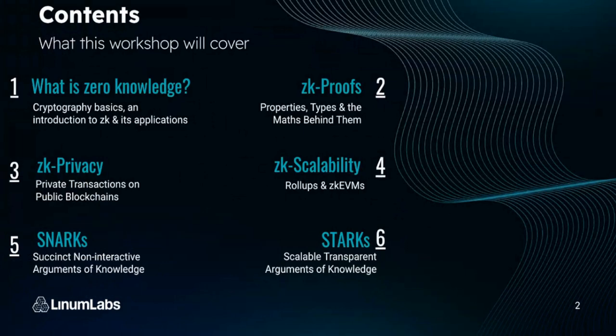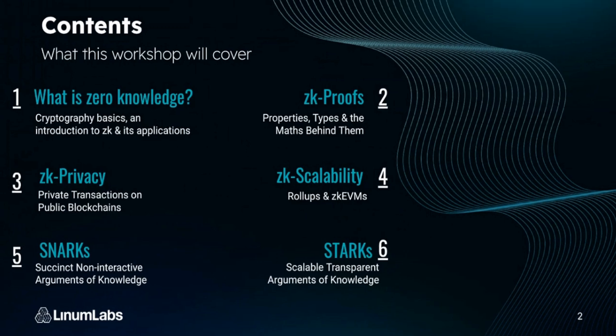What we'll be covering today is cryptography basics and an introduction to zero knowledge and its applications. Then we'll look at zero knowledge proofs, their properties, the types of zero knowledge proofs and the math behind them. We'll look at privacy and how to get private transactions on public blockchains, zero knowledge scalability through rollups and ZK-EVMs, ZK-SNARKs — the succinct non-interactive argument of knowledge — and ZK-STARKs, the scalable transparent argument of knowledge. These are two very popular types of zero knowledge proofs.